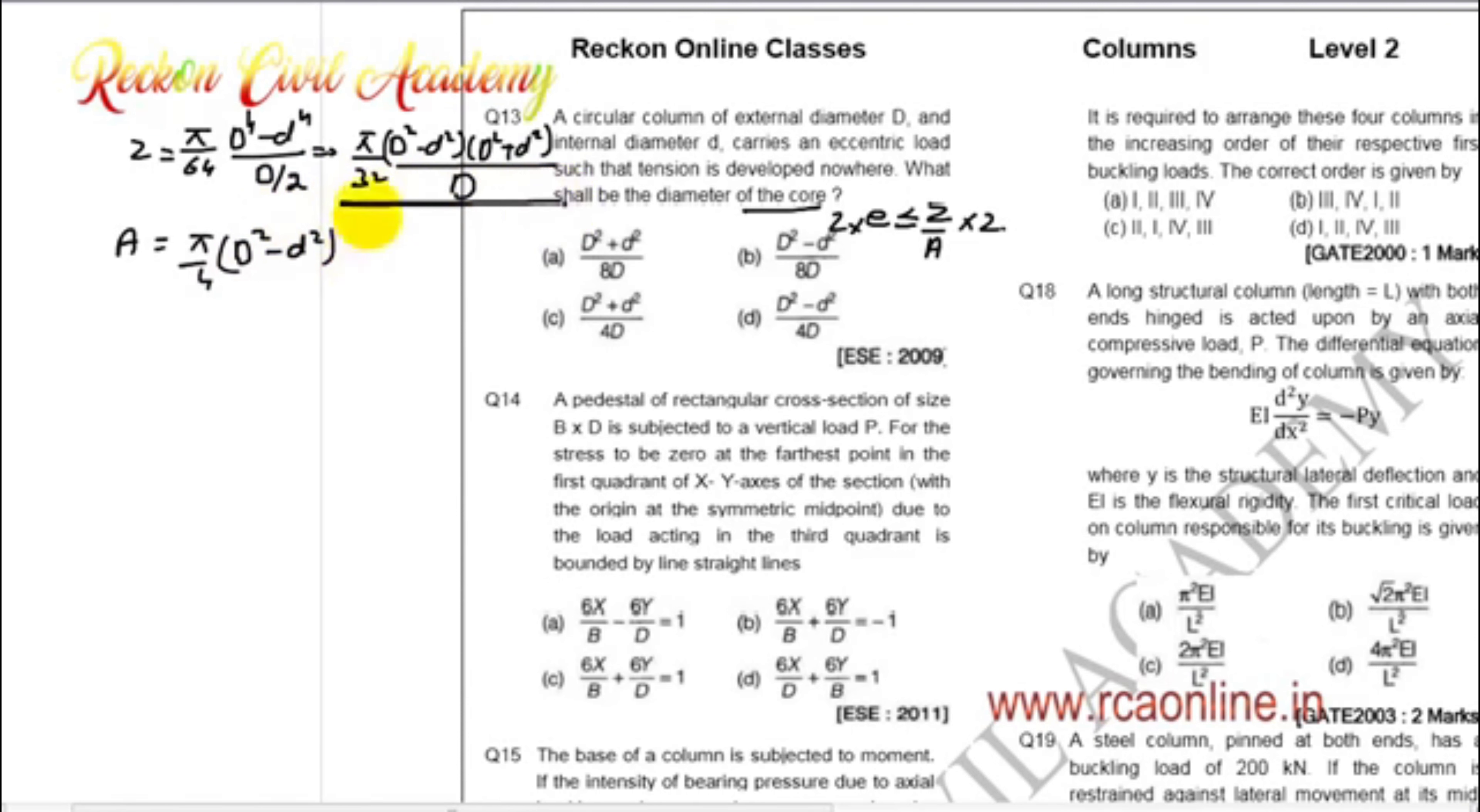Divide by Pi by Pi. Then, Pi by Pi will cancel. 4 by 8 will cancel. Z by A is equal to D square plus D square over 8D.